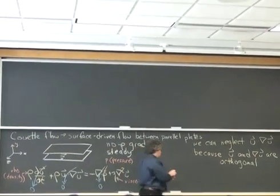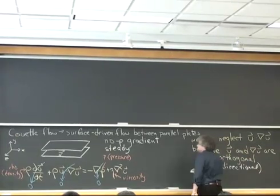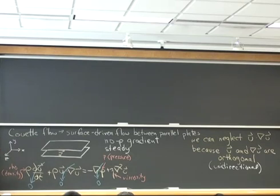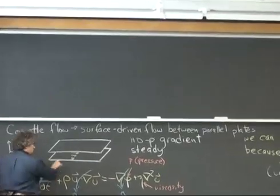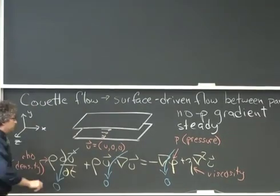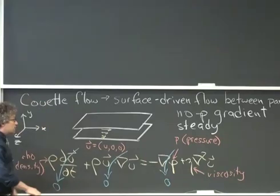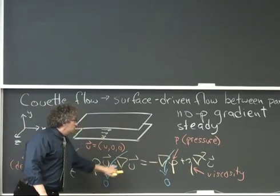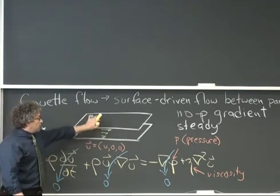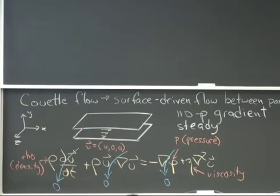The reason why these are orthogonal is basically because I've specified that the flow is unidirectional. In this context, what that means is that if I look at this velocity vector u, which I would normally write with components u, v, and w, the only component that's non-zero is the component in the x direction. That was the constraint of the problem. Furthermore, I said that these plates were infinite in extent, so they extend infinitely in the x direction and infinitely in the z direction. So this gradient only has terms in the y direction. I have velocity in the x direction, I have gradients in the y direction, and when I take the dot products of those two things, they're orthogonal.